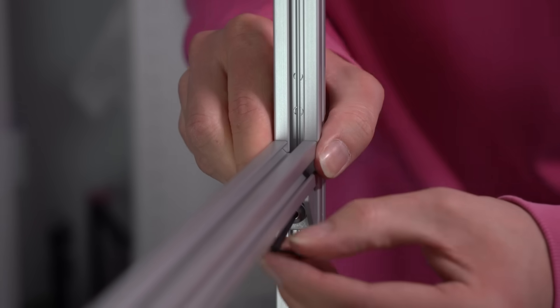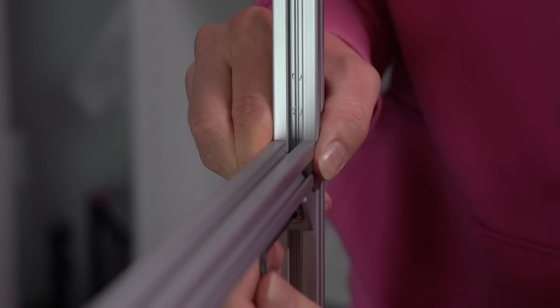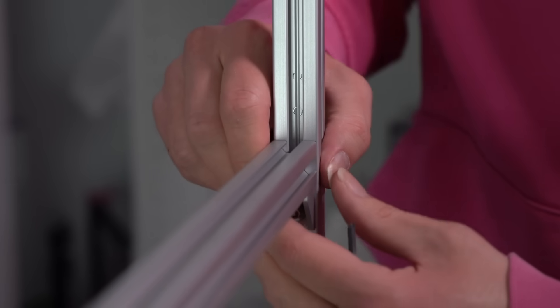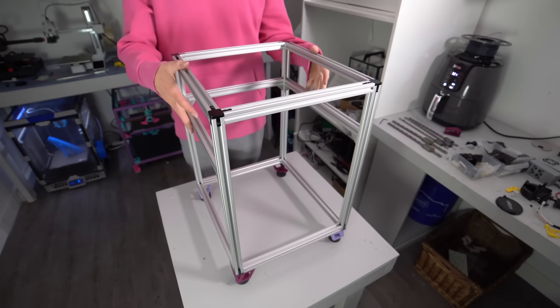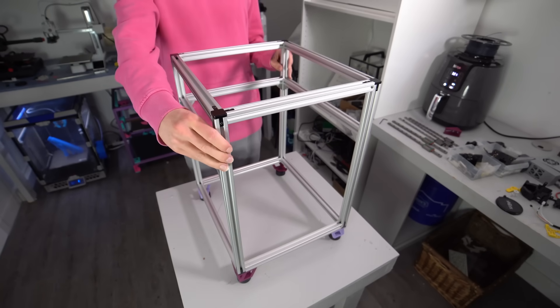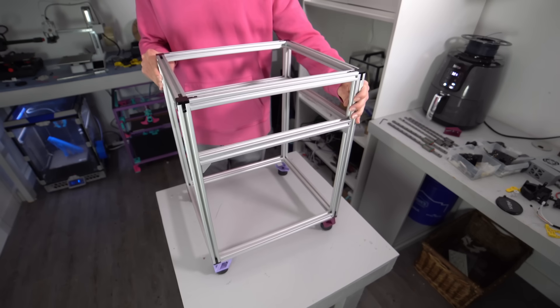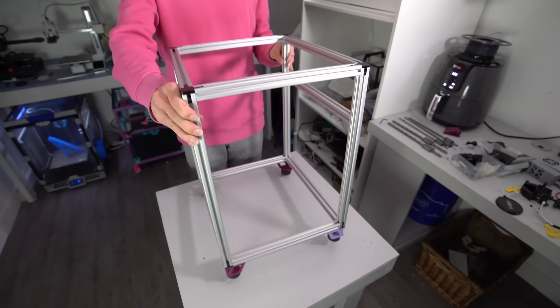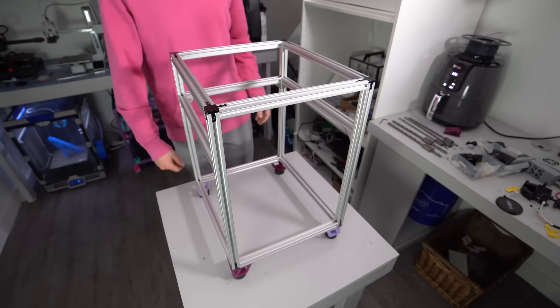I'm not going to lie to you guys, getting everything aligned here is tricky and will take some patience, but it's worth it to get everything square right now so that you don't have any problems later on. When all is said and done, the frame looks like this. In total, it's 340mm wide, 390mm deep, and 450mm tall excluding the feet. This looks great, now we can move on to the Z axis.